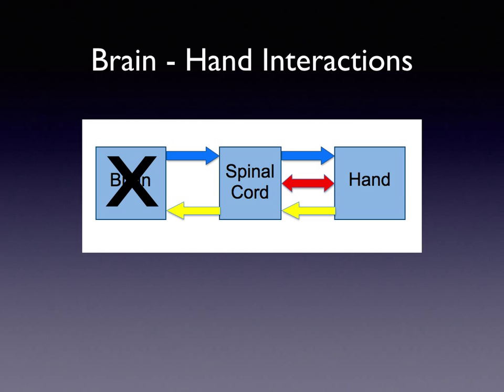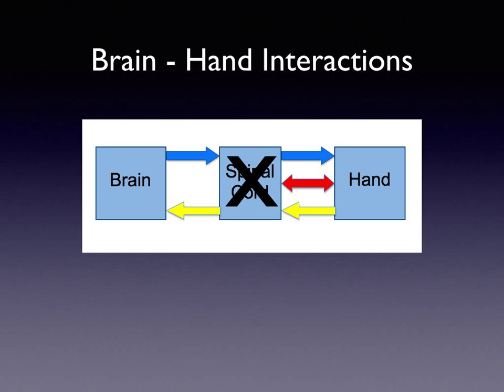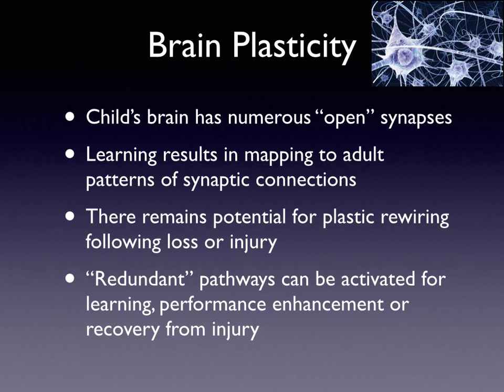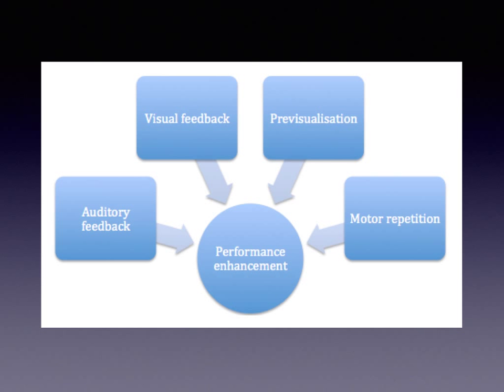It's possible to have injury anywhere along these neural pathways — brain injury with a stroke, central nervous system pyramidal tract damage, injuries in the spinal cord from trauma or tumour, injury to the peripheral nerves, and of course injury to the hand. Brain plasticity refers to the numerous open synaptic reflex pathways present within the child's brain that are mapped to adult patterns of synaptic connections with closing down redundant pathways. But there's the supposedly plastic ability to rewire following injury, so redundant pathways can be activated — we can harness these for learning, to improve performance and recover from injury.